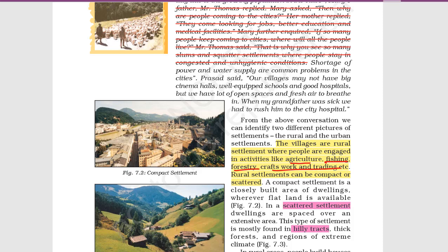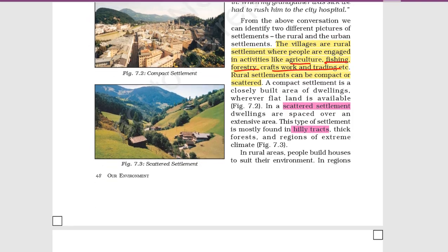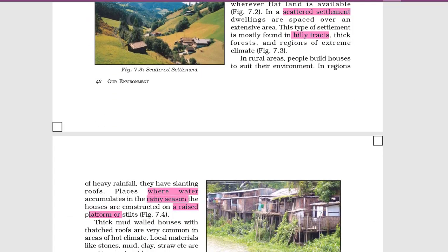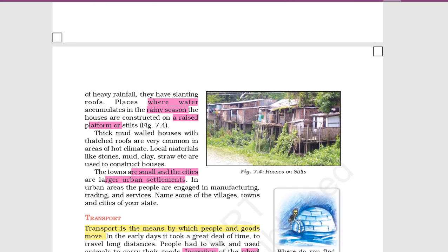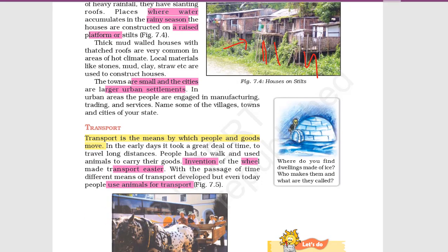Rural settlements can be compact or scattered over a large area. Scattered settlements are generally found in hill tracts, thick forests, and areas with extreme climate. In areas where water accumulates in the rainy season, you can see houses built on raised platforms. Towns are small urban settlements and cities are large urban settlements.